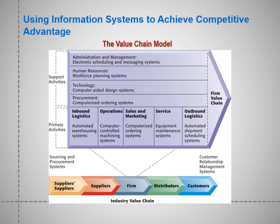Suppliers, firm, distributors, customers — a lot of systems are in place, and the challenge for big companies is making those systems well coordinated with each other. Your primary activities include inbound logistics, operations, sales and marketing, service, and outbound logistics. All of those together create the firm value chain.